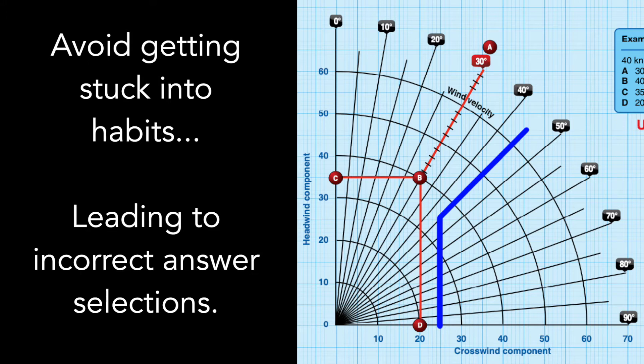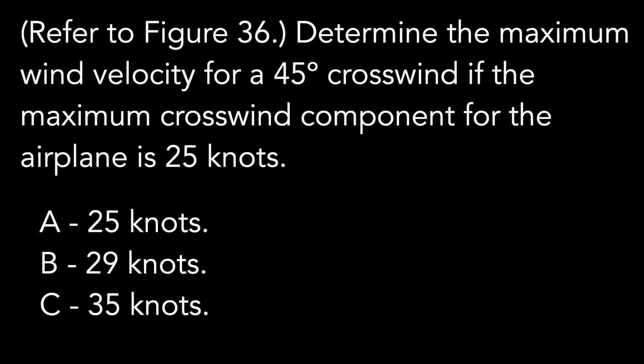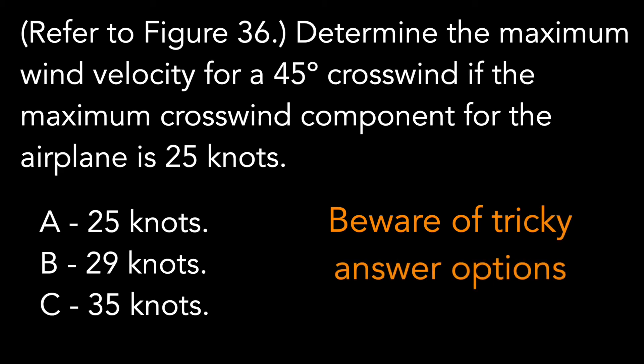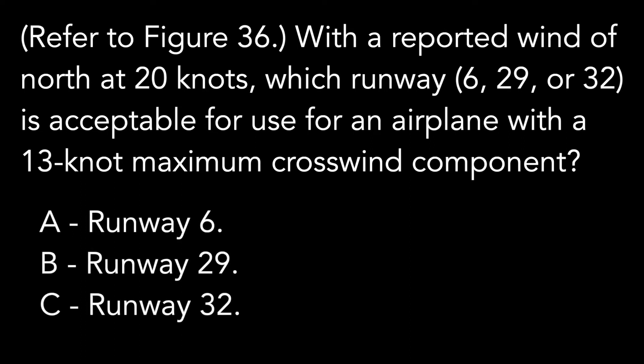This is an example of how the answer options also sometimes include tempting incorrect answers. They're a trap. Don't let habits mislead to wrong selections. Last question, just one more. With a reported wind of north at 20 knots, which runway - 6, 29, or 32 - is acceptable for use for an airplane with a 13 knot maximum crosswind component?